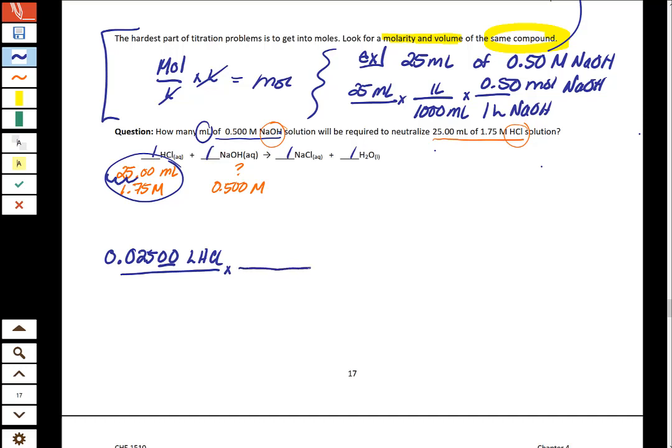So once you have your liters of HCl, you can start to use your molarity. Remember that your molarity of 1.75 molar was really a hidden two-part conversion factor. You want the liters on the bottom, so you need to have your conversion factor written like this.